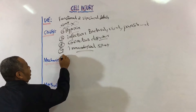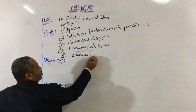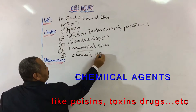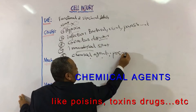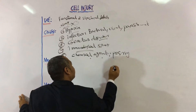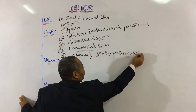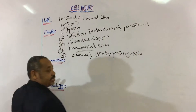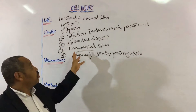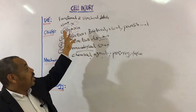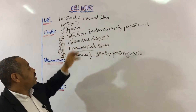Number five is chemical agents — for example, poisoning, toxins, alkalis, or acids. All of these are chemical agents which may result in some sort of destruction to the cell and cause cell injury.